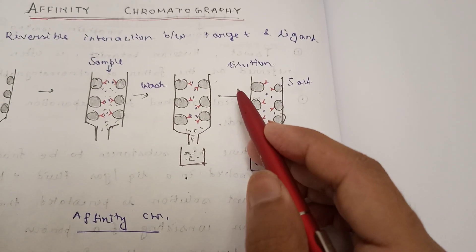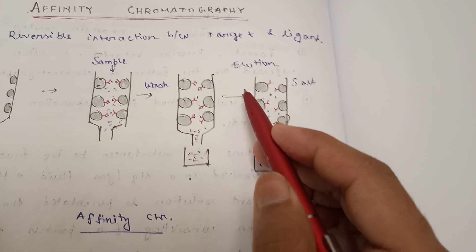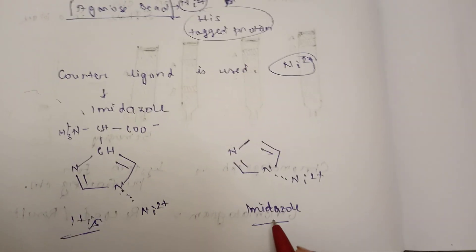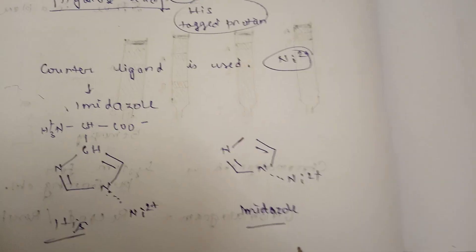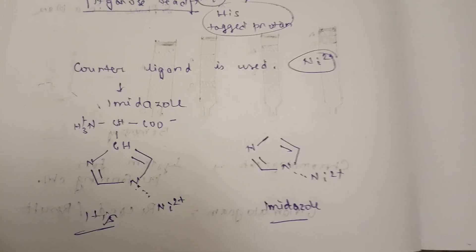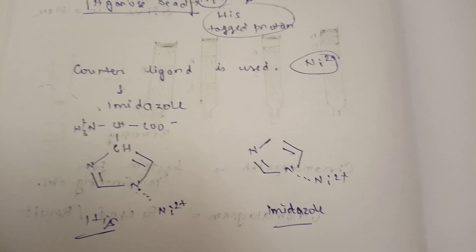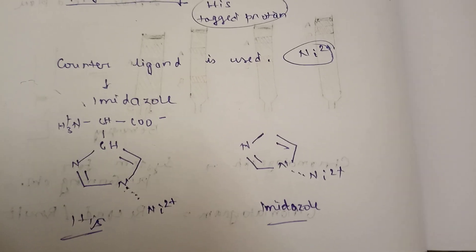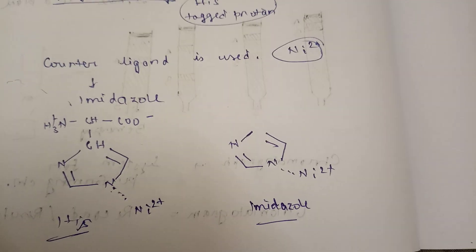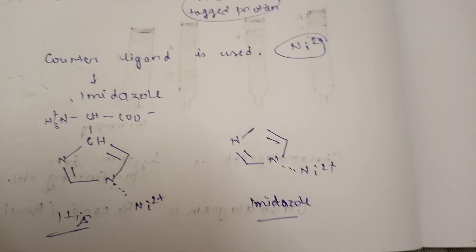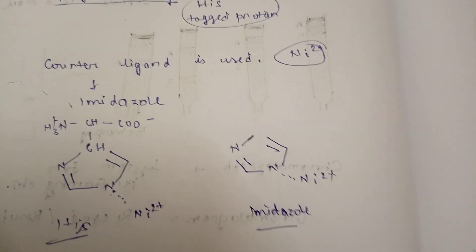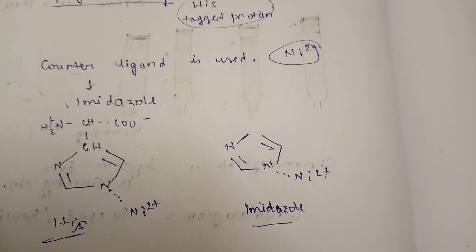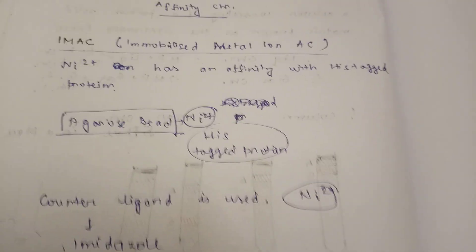Now you use the counter ligand imidazole. What happens? The nickel binds to the imidazole and releases the proteins. That is our protein of interest. Here we can elute the histidine-tagged proteins by IMAC.